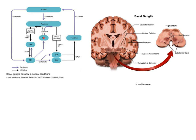In the indirect pathway, inhibitory dopaminergic projections go to the putamen, which inhibits the globus pallidus external segment, which in turn inhibits the subthalamic nucleus. Net inhibition of the subthalamic nucleus means it doesn't activate the globus pallidus internal segment as much, so there's less inhibition of the thalamus, meaning cortical activation is greater. Both the direct and indirect pathways effectively take the brakes off the thalamus so the cortex becomes more activated and we can initiate more movements.